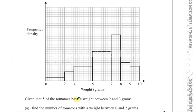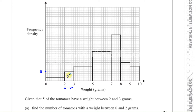Given that five of the tomatoes have a weight between two and three grams, find the number of tomatoes with a weight between zero and two grams. So we know that the bar between two and three grams represents five tomatoes. The width of the bar is one, and there are five squares, so that's one times five — a frequency density of five, because five times one gives you five.